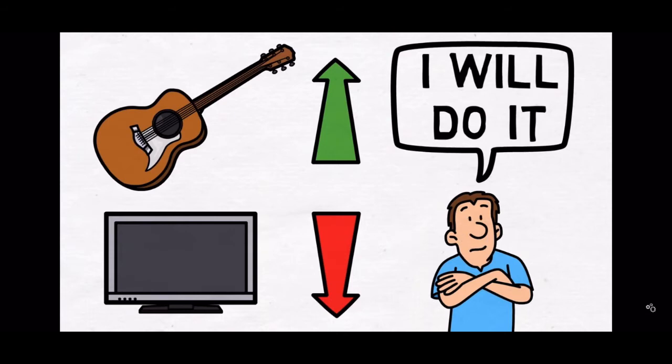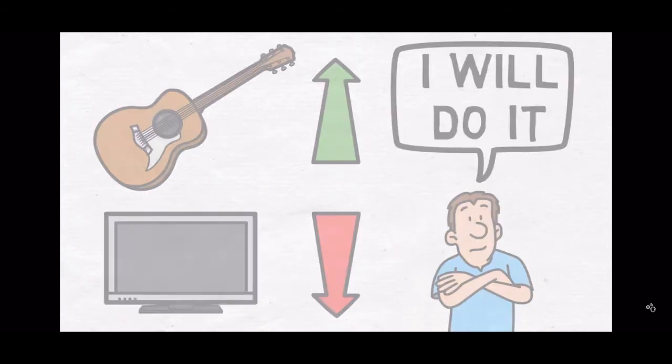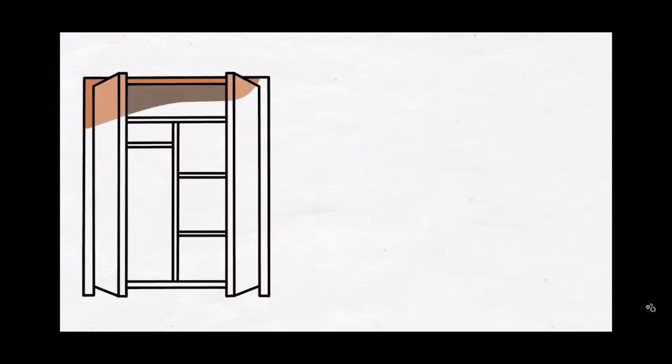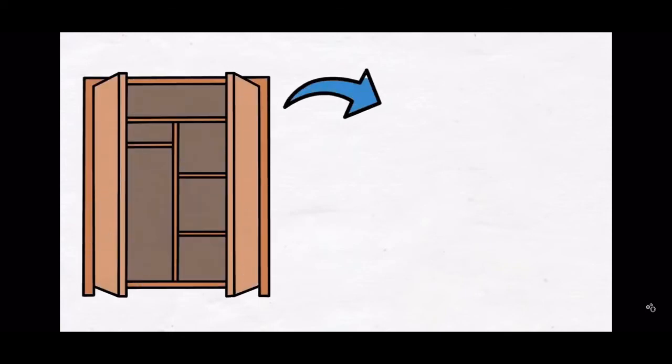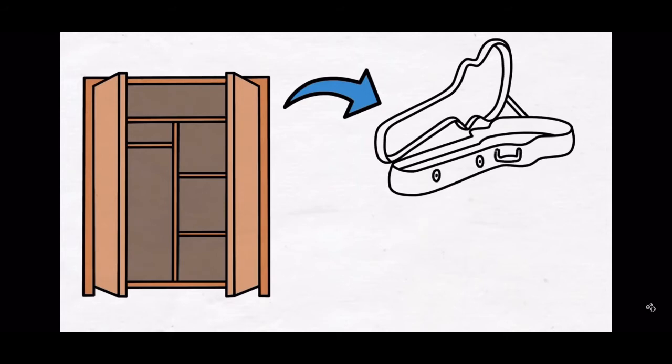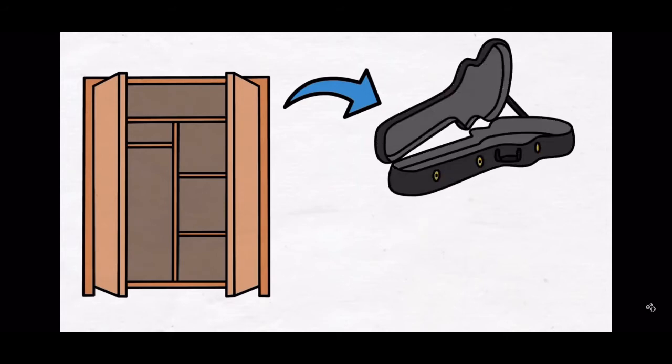Sean recognized that he needed to disrupt his default behavior somehow, otherwise nothing would change. So he started looking for a solution. He realized that every time he wanted to play his guitar, he had to first go in the closet, get the guitar case out, and only once he got the guitar out of its case could he actually play.